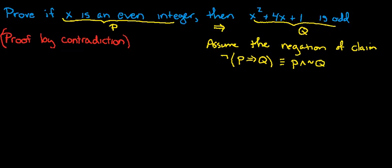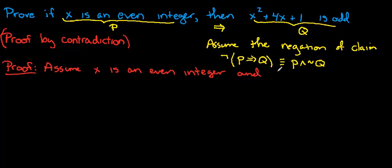Alright, so let's start our proof. Recall that when you start a proof, you should use the word proof to denote that your proof is starting. So proof, let's assume p and not q. Let's assume x is an even integer, and not q, and x squared plus 4x plus 1 is even.